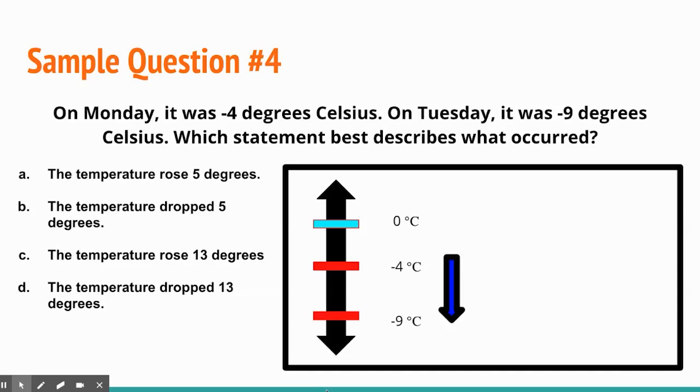C, because it said the temperature rose 13 degrees. We know that's not true. And we know the temperature did not rise at all. So it can't be A. So now we're left between B, which is five or D and 13.